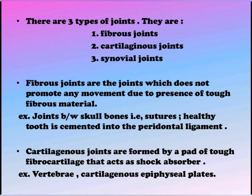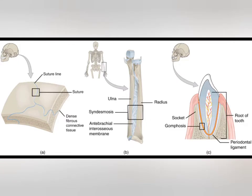Fibrous joints are joints which do not promote any movement due to the presence of tough fibrous material between them. Examples are joints between skull bones, i.e. sutures. A healthy tooth is cemented into the periodontal ligament. Here we can see the images of them.